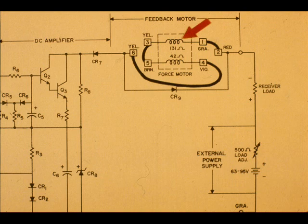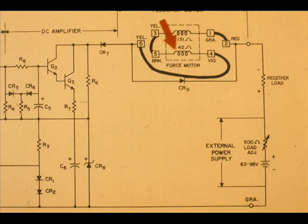The current flows one way through the 131 ohm coil and the opposite way through the 42 ohm coil. The net force is 131 minus 42, which equals 89 ohms. Only the 42 ohm coil is used for the low spans, while the full force of 131 plus 42 ohms is used for the high spans.